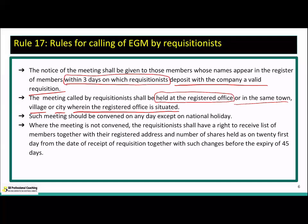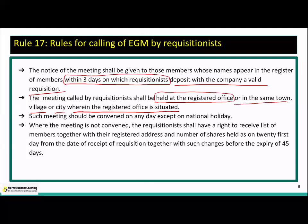Where the board does not convene the meeting, the requisitionists shall have the right to receive the list of members together with their registered addresses, so that they can send the notice. This list is based on the 21st day from the date of receipt of the requisition. If the board has not completed its process by the 21st day, the board shall provide the requisitionists with the member list, registered addresses, and number of shares held — together with any changes — before the expiry of 45 days from the date of deposit of the requisition.